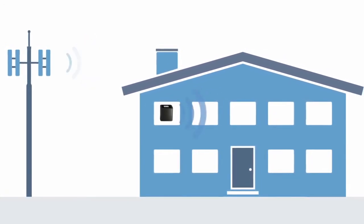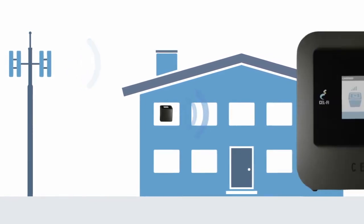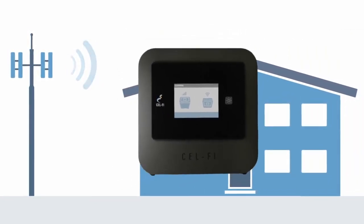The Network Unit collects the signal from the mobile network and transmits it to the coverage unit. Now, let's set up the coverage unit.